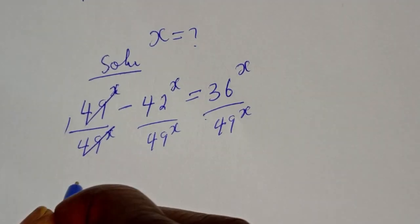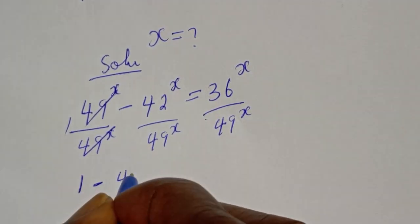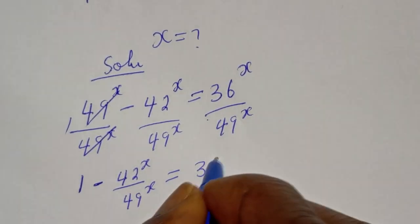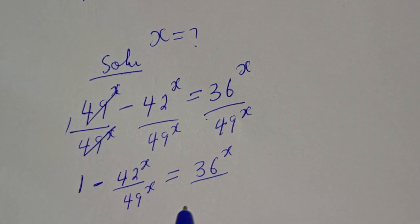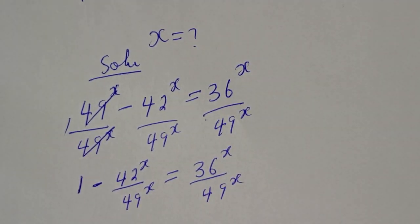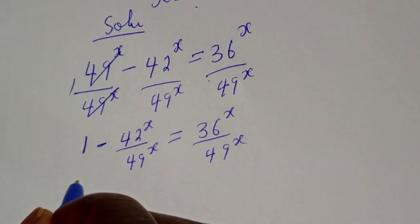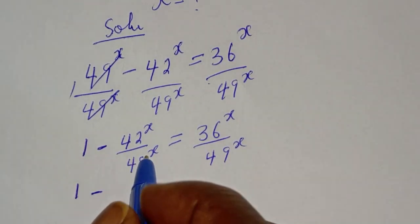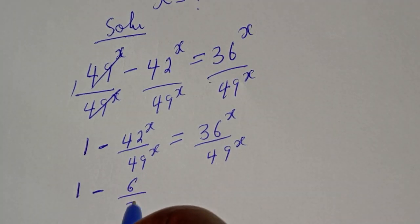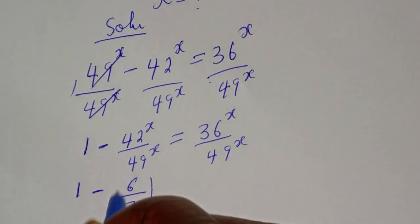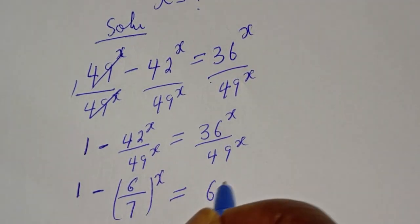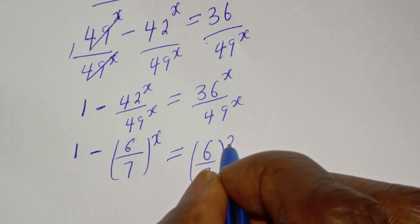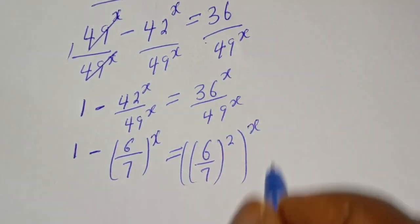This gives 1 minus 42 raised to power x over 49 raised to power x. This is the same thing as 1 minus (6 over 7) all raised to power x, which is equal to (6 over 7) squared all raised to power x.